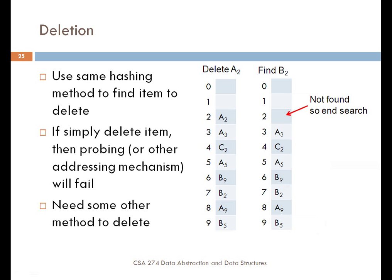We've talked primarily about adding things to a hash table and about how to find elements. The other thing we need to be able to do is delete things from a hash table. We use the same hashing method we would use when finding or adding an item: compute the hash value, check the location in the array, find that element, and remove it. It might not be in the very first place you look, so you have to use linear probing or whatever technique you're using to store elements.